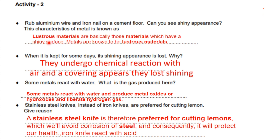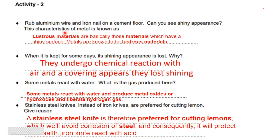The first question involves using aluminum wire and cement floor. If we are going to use metal, we are going to examine metal characteristics and metal materials. When kept for some time, the shining appearance of metals is lost.